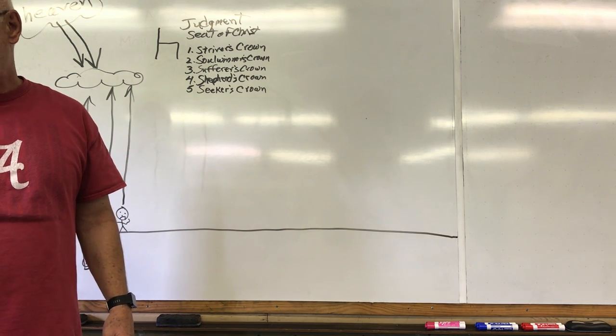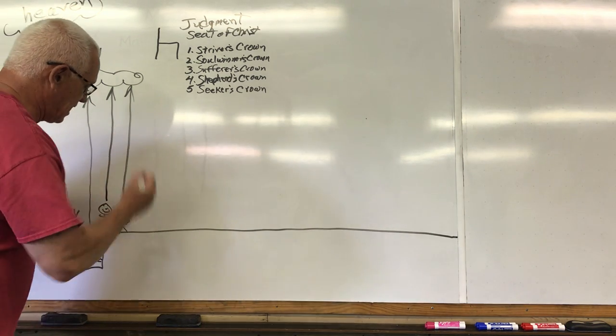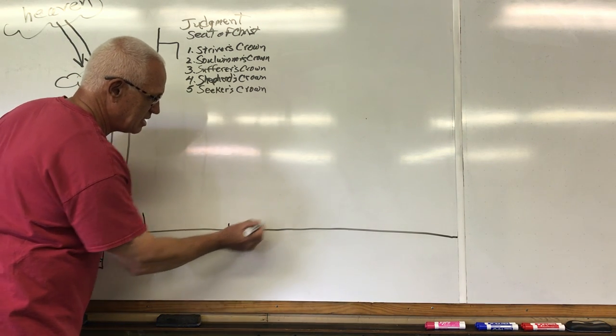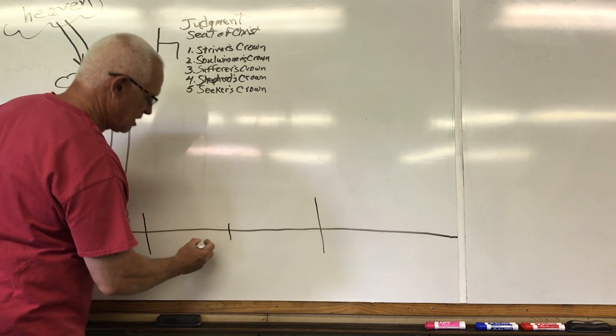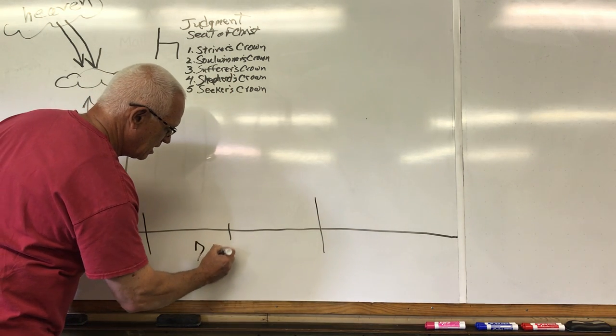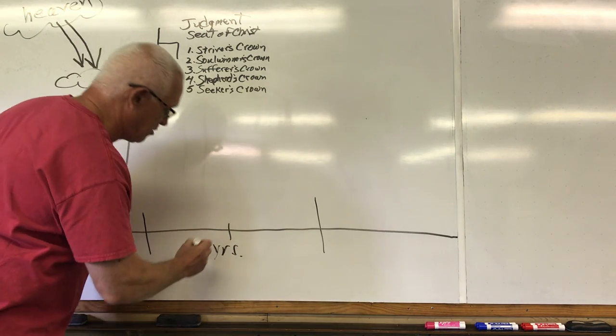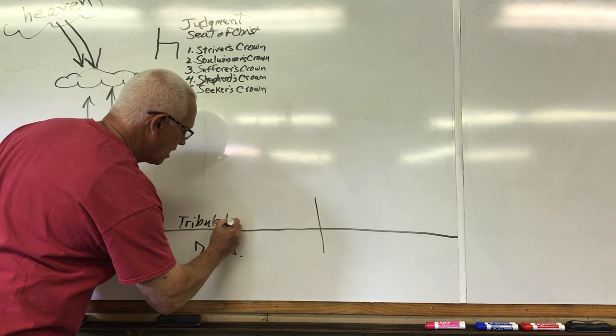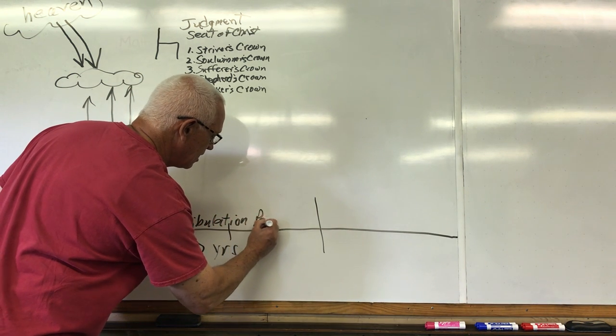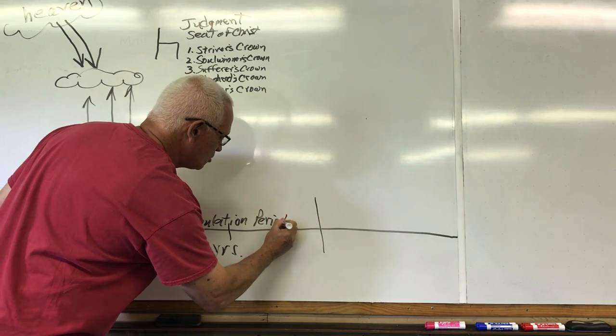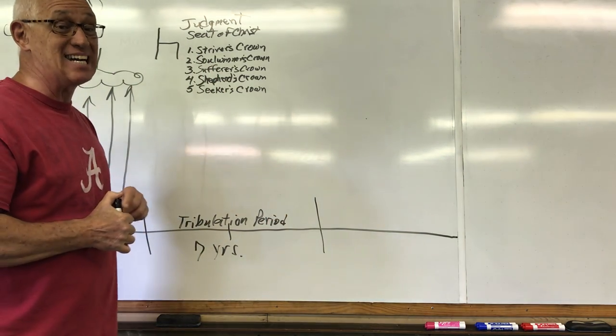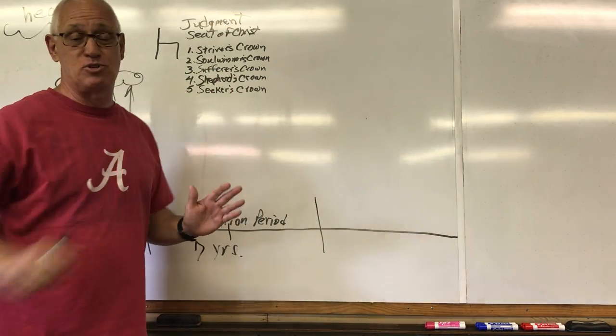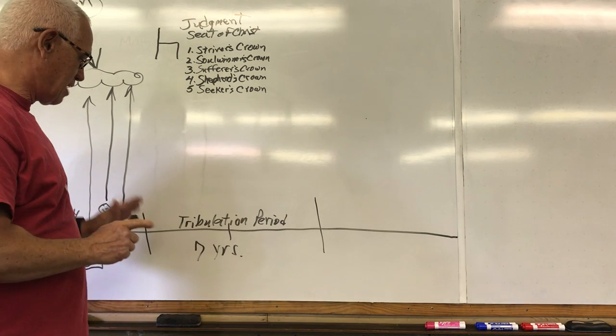After the judgment seat of Christ, what's happening down here on earth is a seven year period, and we'll mark that. Seven years called the tribulation period. This is a very important time in the scripture. From chapter 6 to chapter 19 in the book of Revelation, he's talking about this time. All those chapters are given over to talk about the tribulation period.